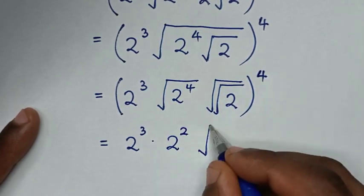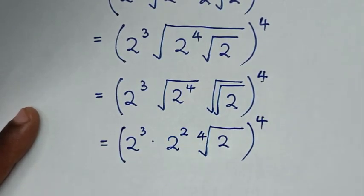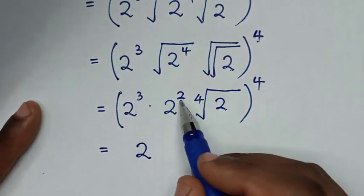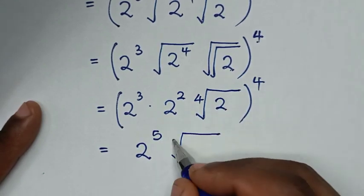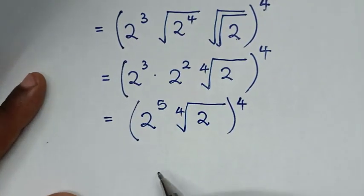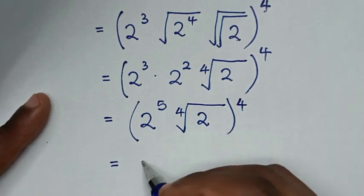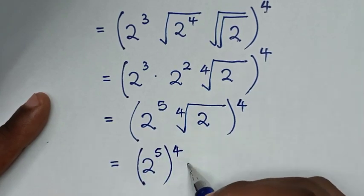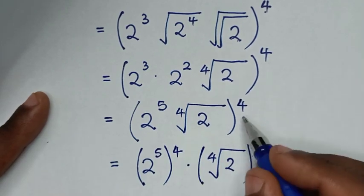Then square root times square root is the same as a fourth root, so it will be fourth root of 2, bracket power of 4. In the next step it will be equal to 2 power of 3 plus power of 2, which is power of 5, then times this fourth root of 2, bracket power of 4. We'll take this power of 4 inside the bracket, so it will be 2 power of 5 then bracket power of 4, then times fourth root of 2.